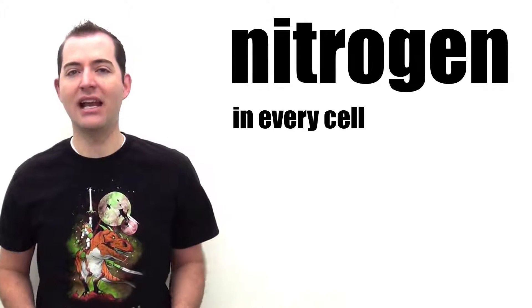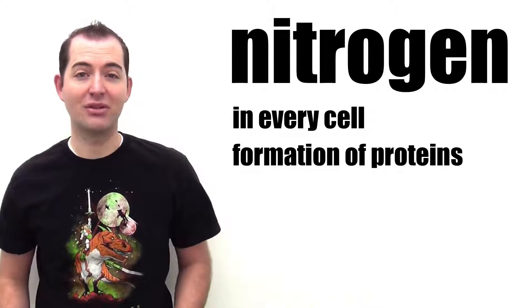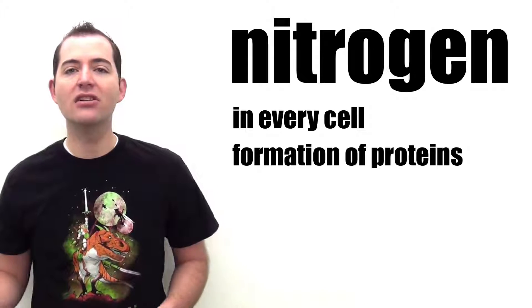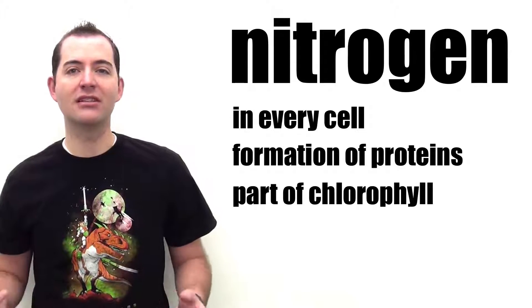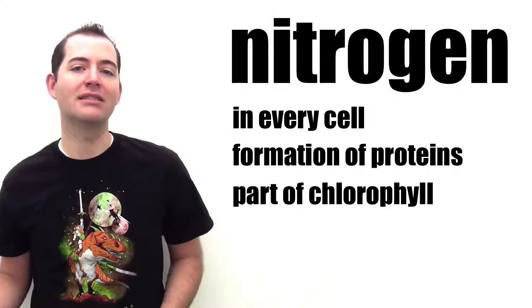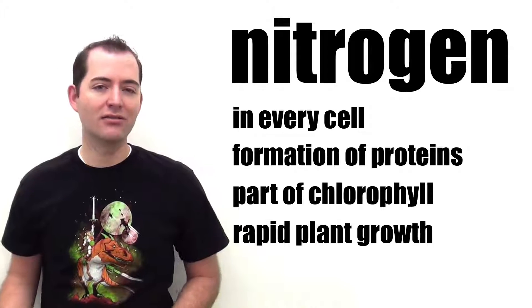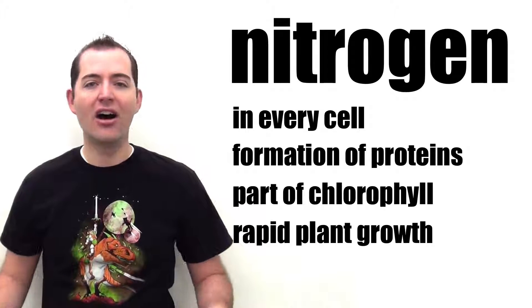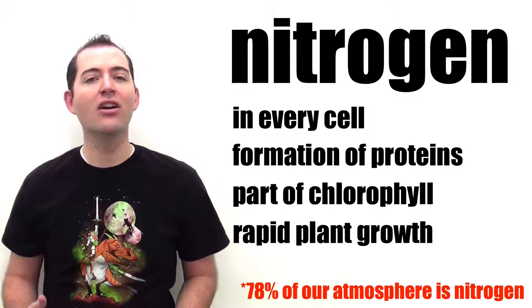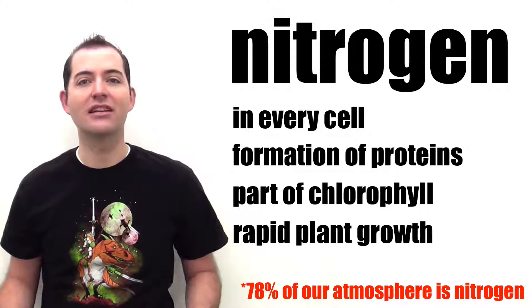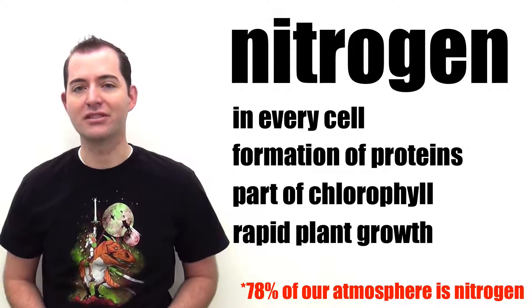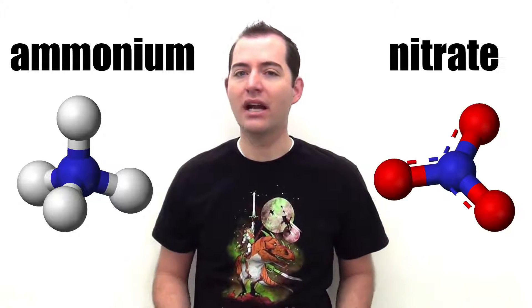Nitrogen is used in every cell of the plant and is part of the formation of protein. It is also part of the chlorophyll, which is essential to the process of photosynthesis. Nitrogen can influence rapid plant growth and it often gets into the soil from the air or from fertilizers in crop production. Nitrogen is absorbed by plants in the form of ammonium or nitrate.